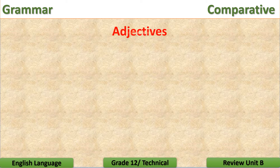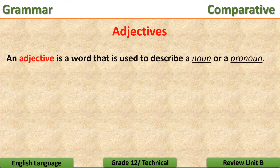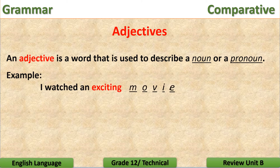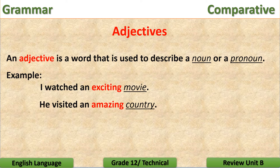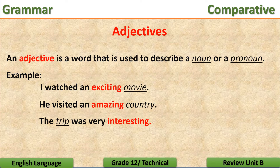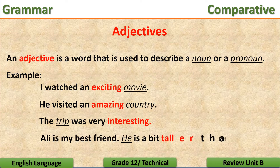An adjective is a word that is used to describe a noun or a pronoun. Like in the following examples: I watched an exciting movie. He visited an amazing country. The trip was very interesting. Ali is my best friend — he is a bit taller than me. So all the words in red here are called adjectives because they describe either a noun or a pronoun.